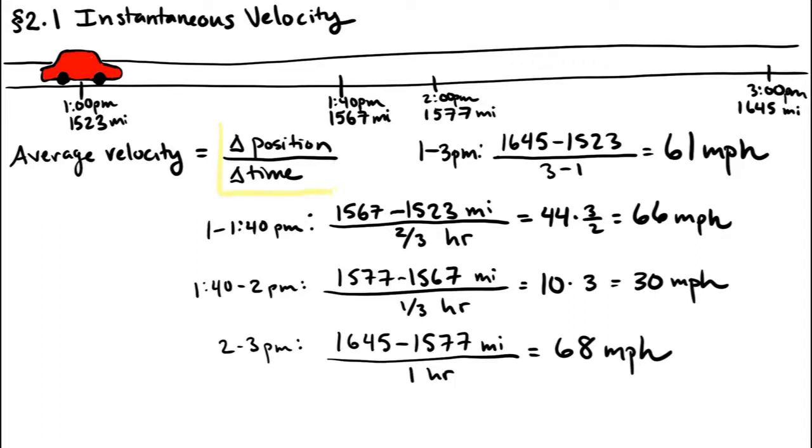But then in our formula here, if your start and end times are equal, the change in time would be zero and the change in position would also be zero. We can't calculate zero over zero, so how can we actually get to this instantaneous velocity?